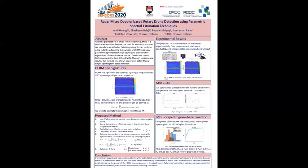MDL performs very well with a probability of detection of 0.85 and a false alarm rate of 0.06. AIC consistently overestimated the number of harmonic components, so it had a lot of false alarms.